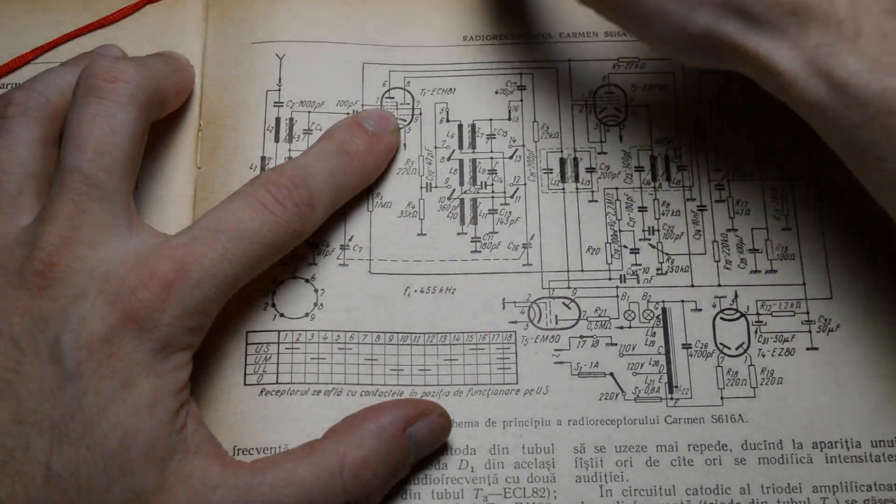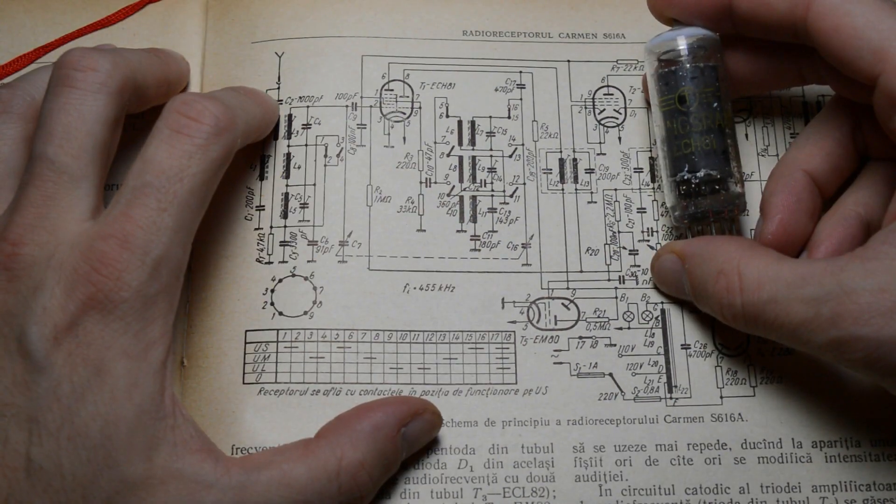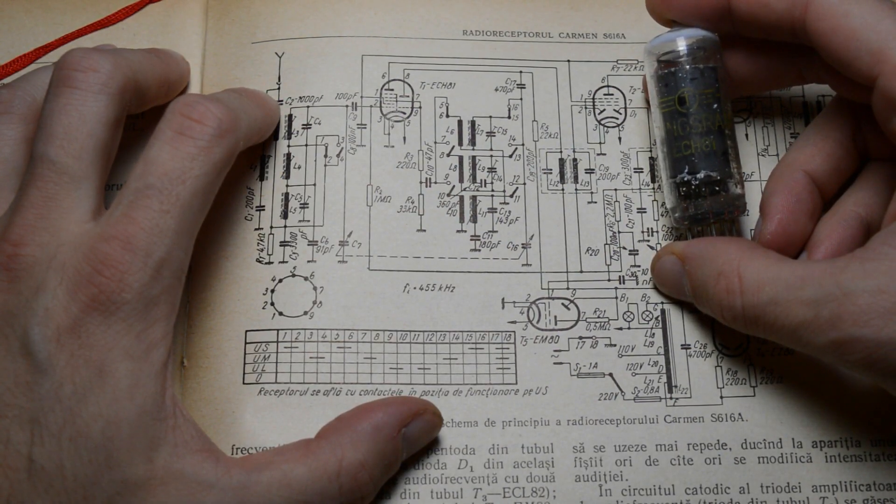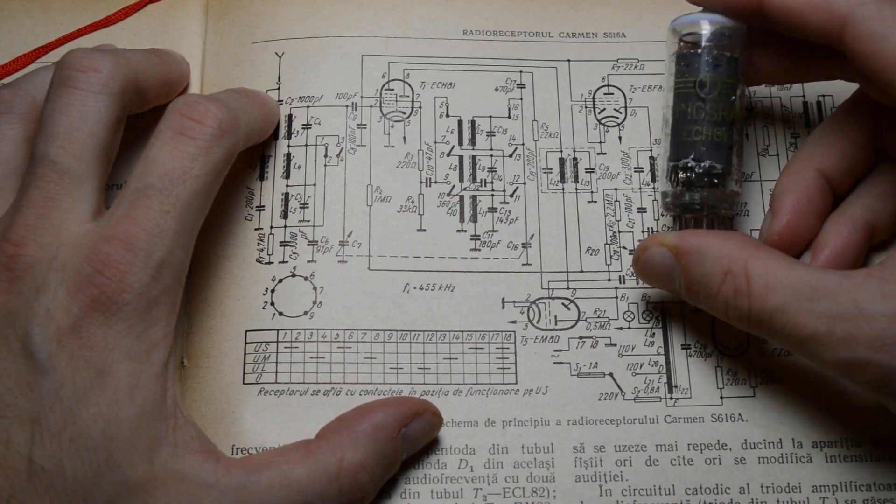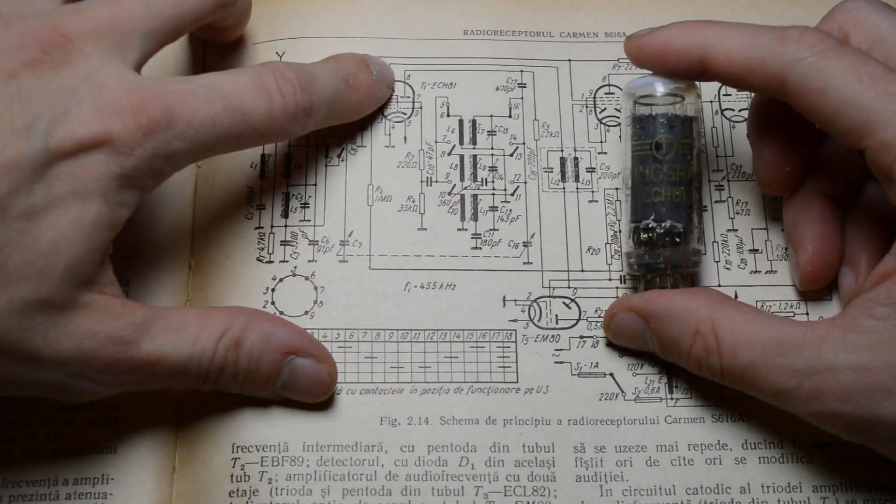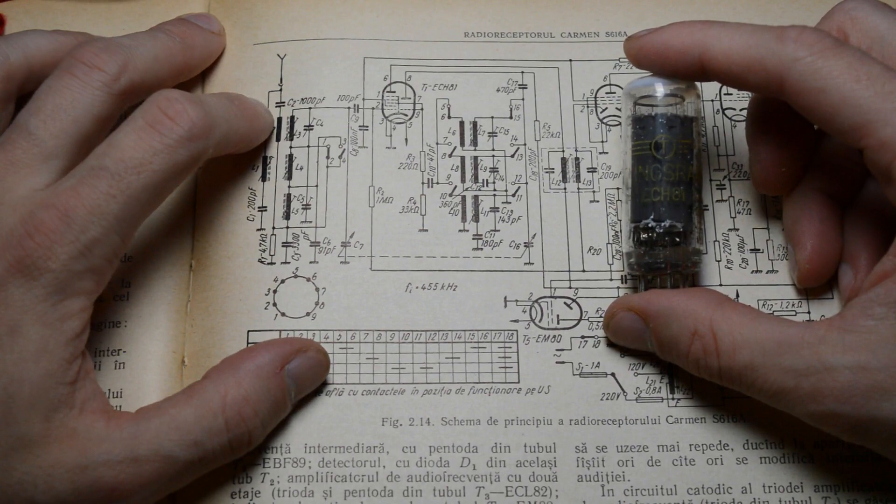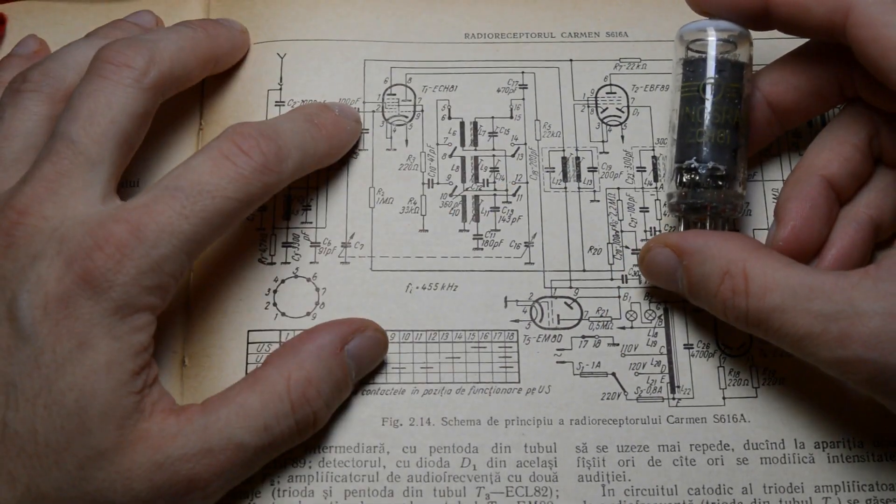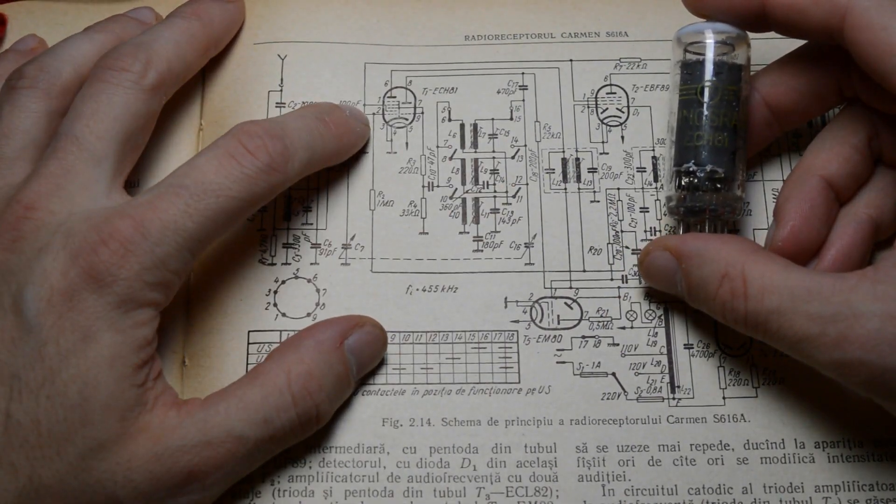The ECH-81. This is a triode-heptode vacuum tube, meaning that there are two tubes inside here. We got the triode part on the right side, responsible with the local oscillator of the radio, and then the heptode on the left side.